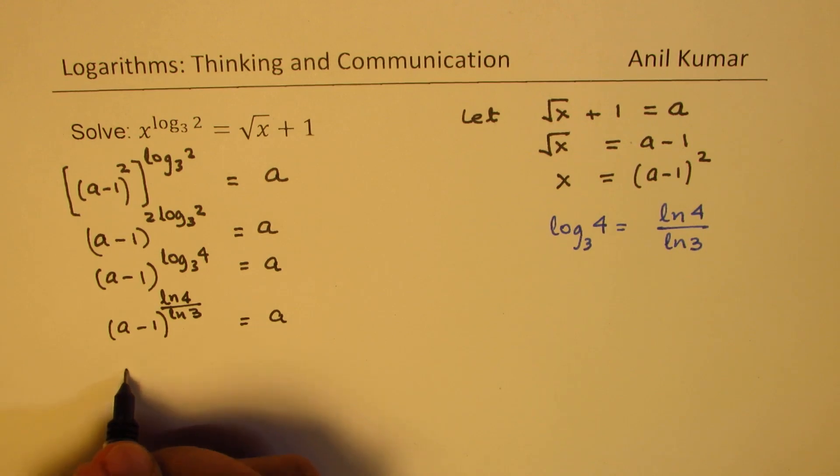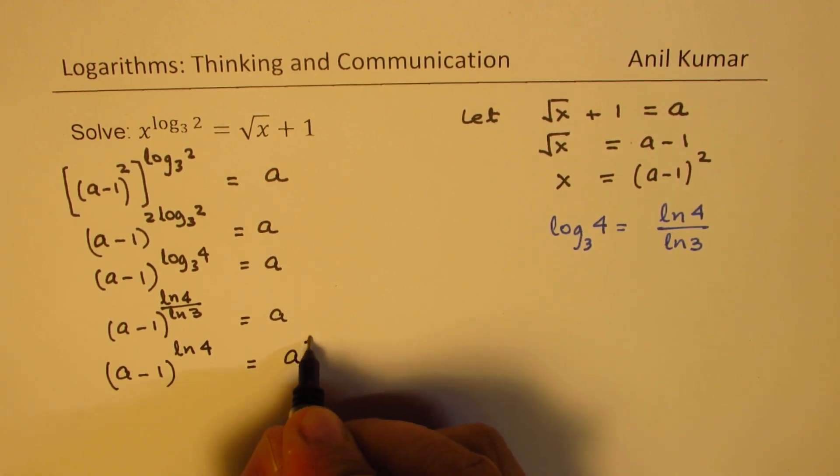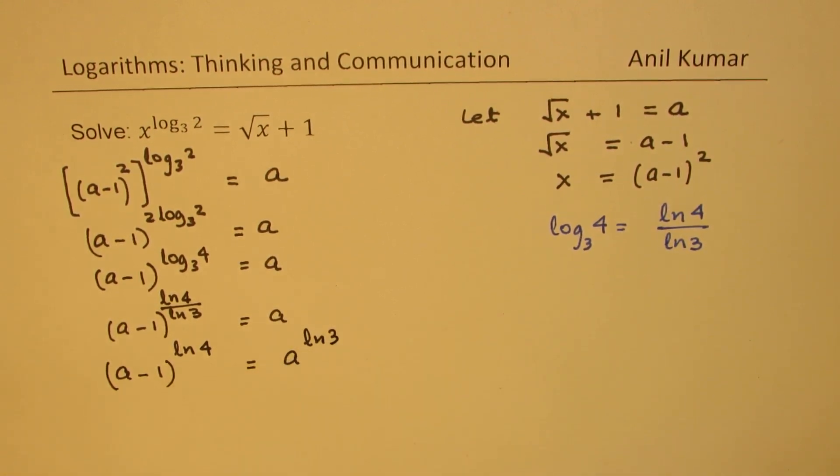So we have a minus 1 to the power of ln 4 over ln 3 equals a. This can be further simplified and we can write this as a minus 1 to the power of ln 4 equals a to the power of ln 3.